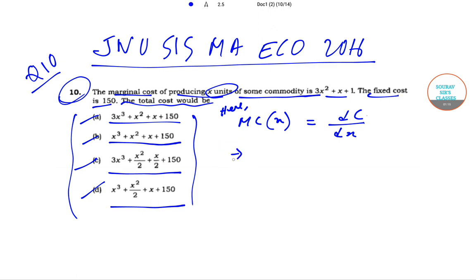So what we can do - this implies that dC is nothing but MC(x) times dx. That implies that C will be the integration of MC(x) dx.